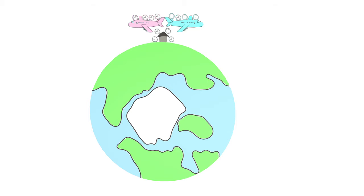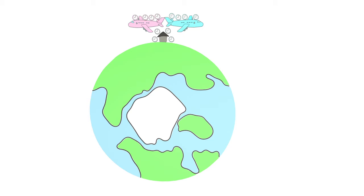However, since the planes are also further away from the center of the Earth, a lower gravitational force acts on them than on the clocks on the ground. The general theory of relativity says that clocks move more slowly under the action of gravity. The greater the gravitational force, the slower the clocks go.